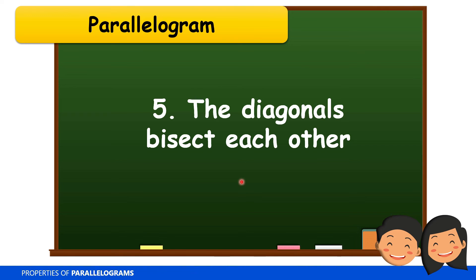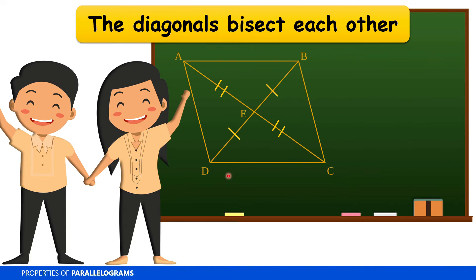The next property is about the diagonals: the diagonals of a parallelogram bisect each other. In parallelogram ABCD, the diagonals are segment AC and segment BD — they are line segments connecting opposite vertices. The diagonals intersect at point E, which is the midpoint, meaning the diagonals are each divided into two equal parts.